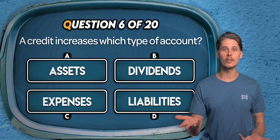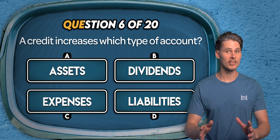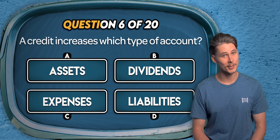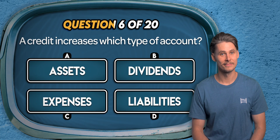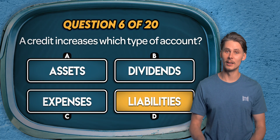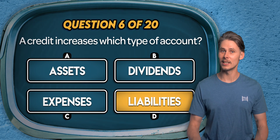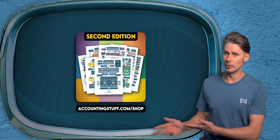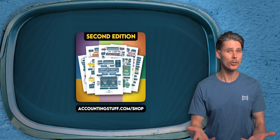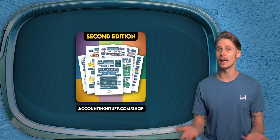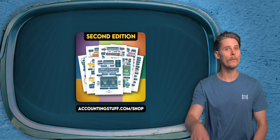Question 6. A credit increases which type of account? Assets, dividends, expenses, or liabilities? It's D. Liabilities are represented by the L in DEALER, meaning they're normal credit accounts — so credits increase liabilities and debits decrease them. If you're finding this tough, check out my all-in-one accounting cheat sheet bundle at accountingstuff.com/shop or follow the link in the description.